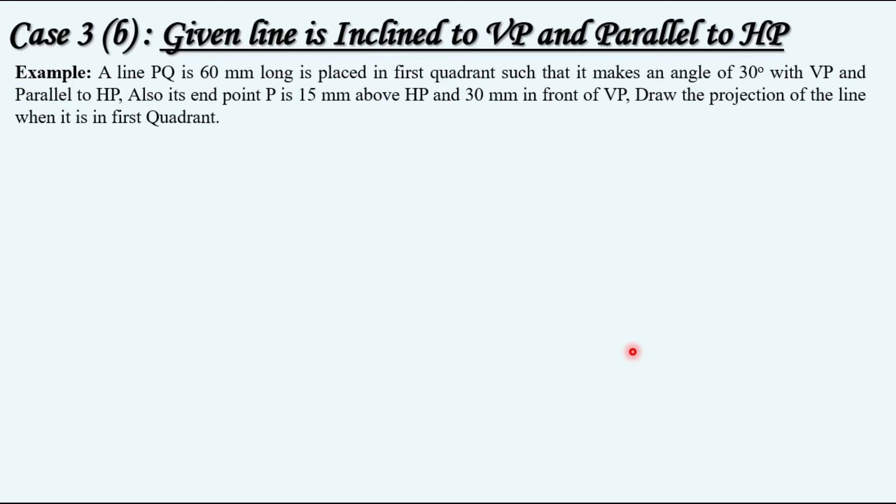A line PQ is 60 mm long, placed in the first quadrant such that it makes an angle of 30 degrees with VP and parallel to HP. Also, its endpoint P is 15 mm above HP and 30 mm in front of VP. Draw the projections of the line when it is in the first quadrant.